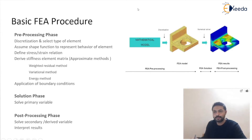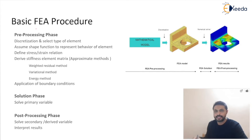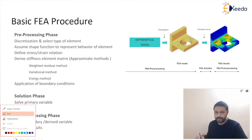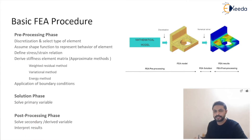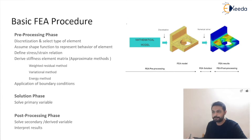To understand the weighted residual method, we first need to revise some basic fundamentals — specifically the FEA procedure, which is divided into three phases: the pre-processing phase, the solution phase, and the post-processing phase. In the pre-processing phase, we convert any engineering problem into a mathematical model and divide the whole system into small finite elements. That procedure is known as discretization.